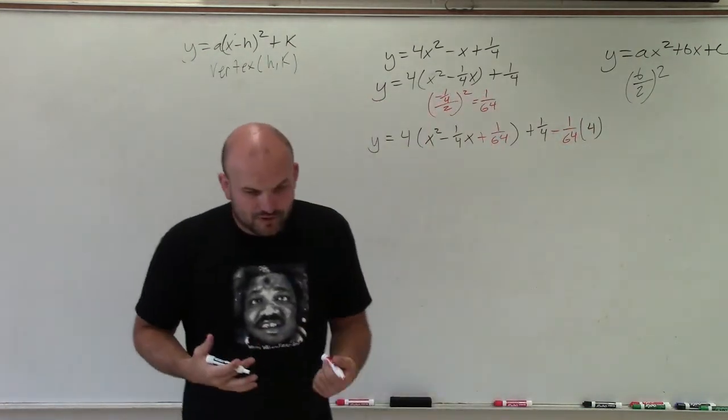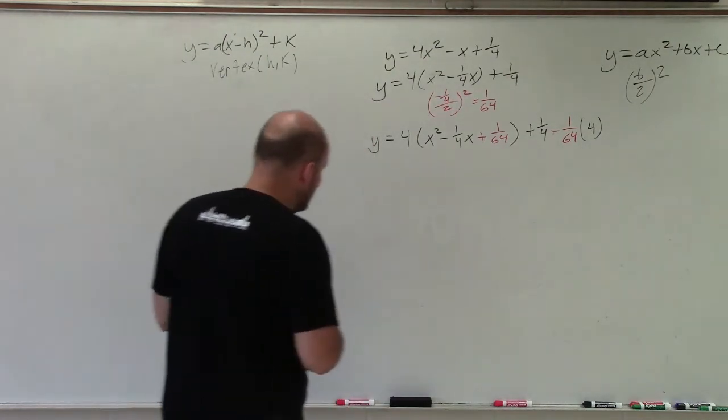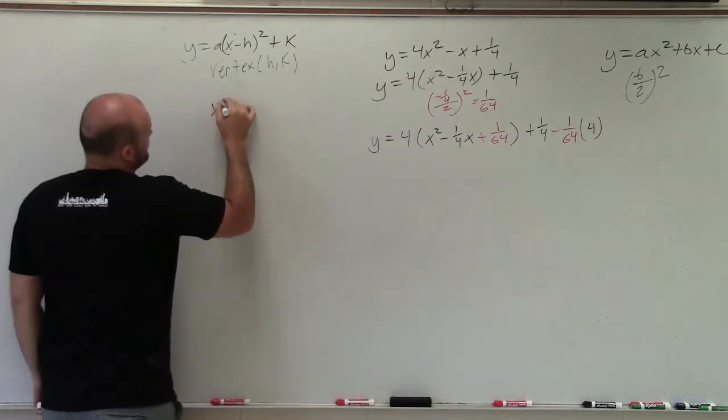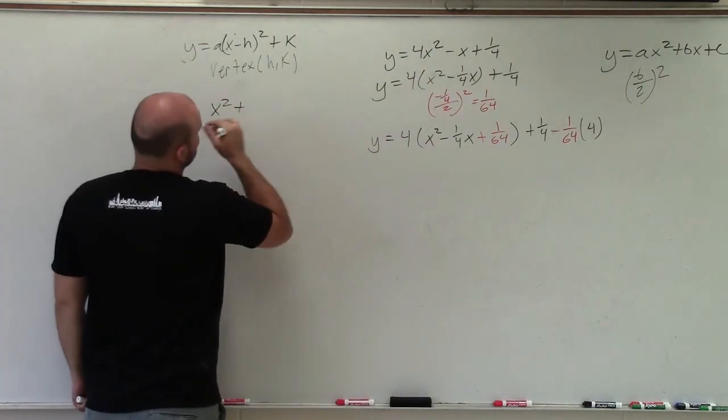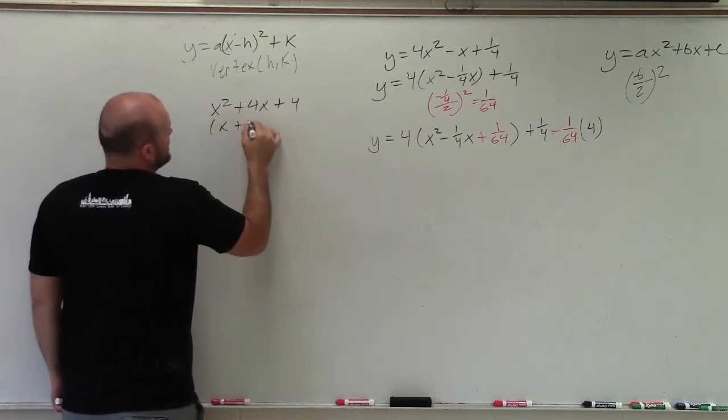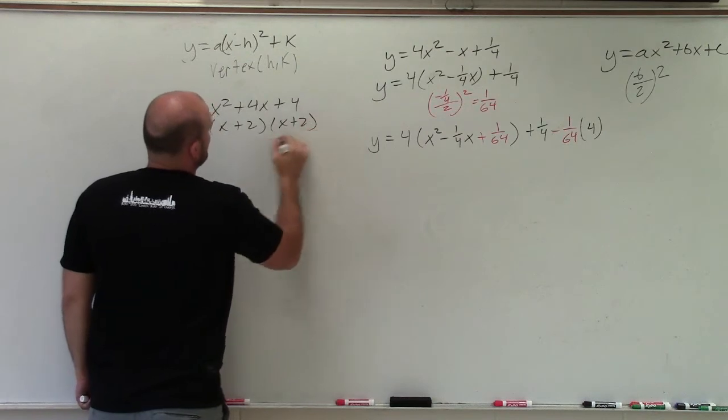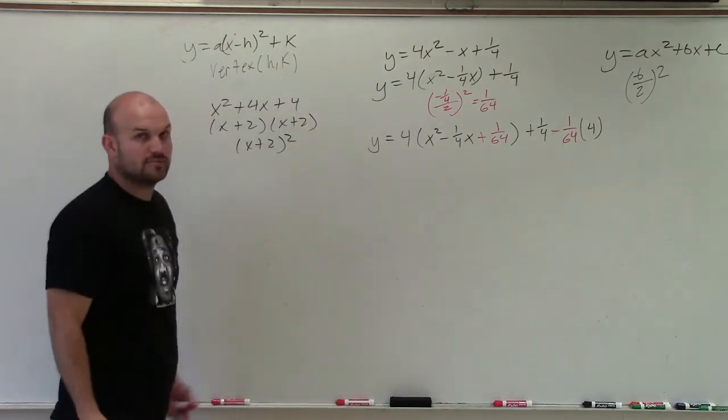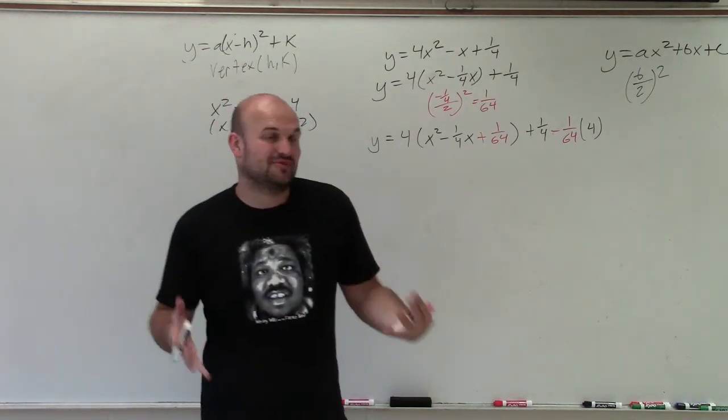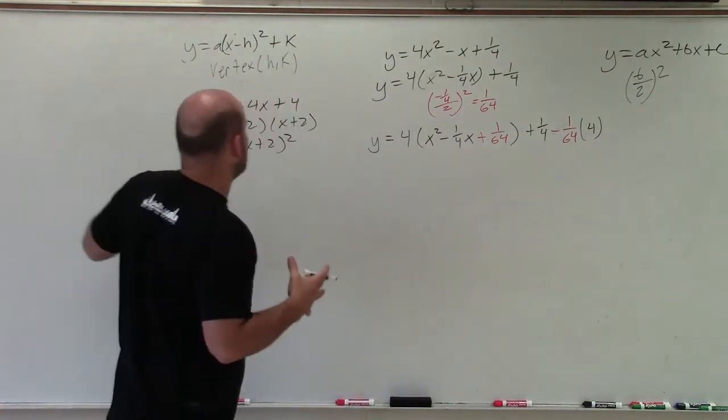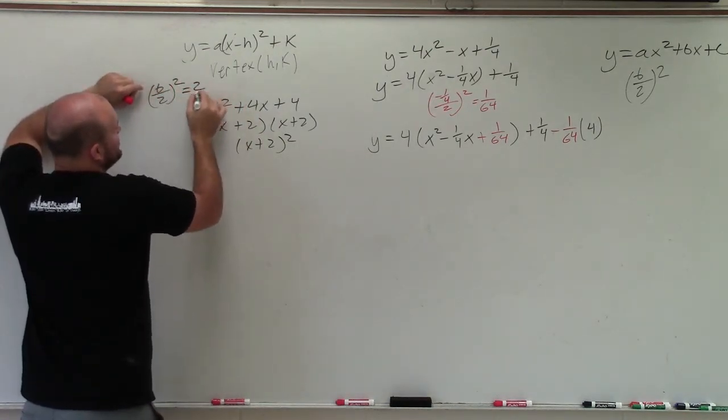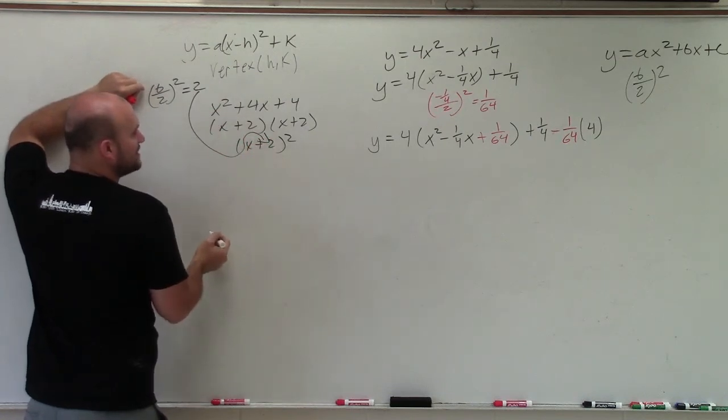Now we need to create a perfect square trinomial. We need to factor this and this is where it gets students confused. Let's look at one that's easy: x squared plus 4x plus 4. I think everybody would understand that's x plus 2 times x plus 2 which we write as x plus 2 squared.